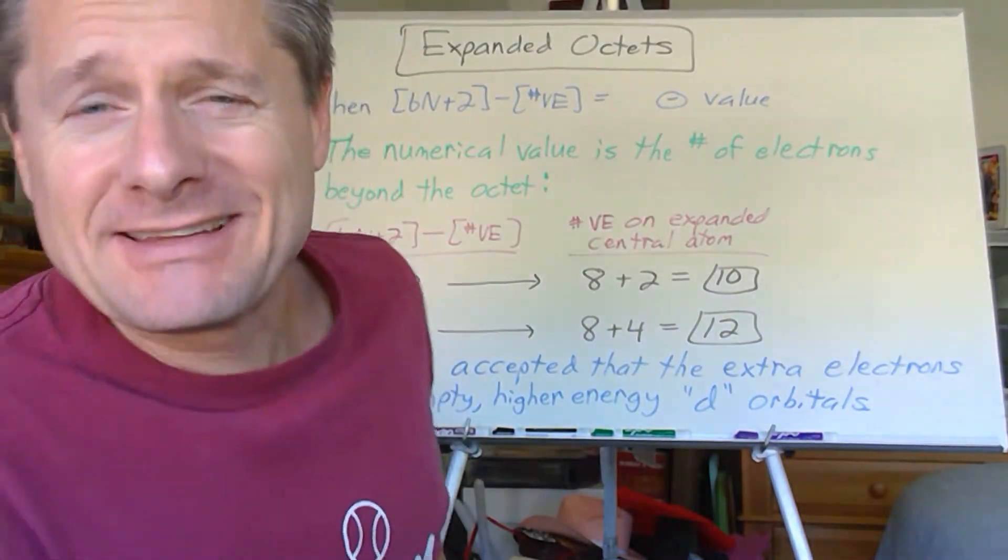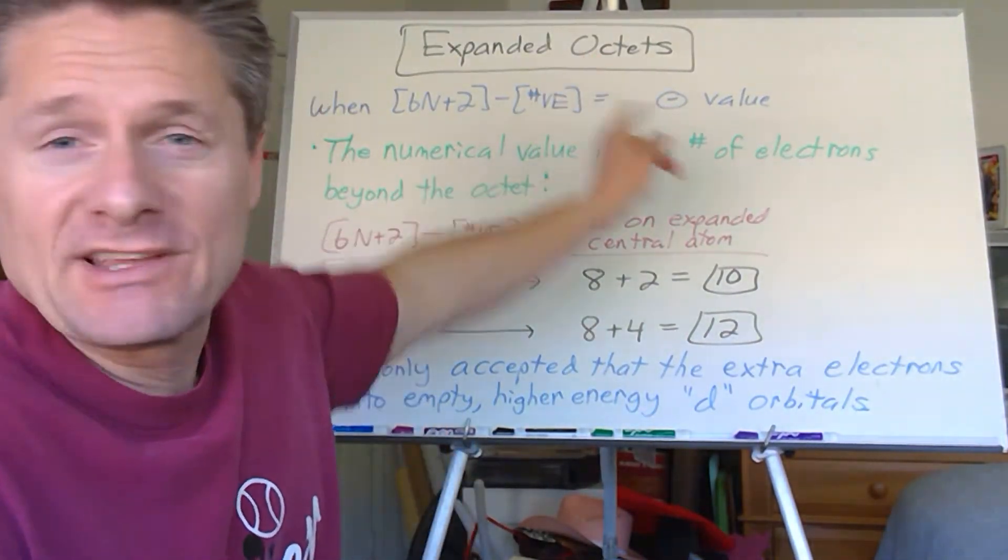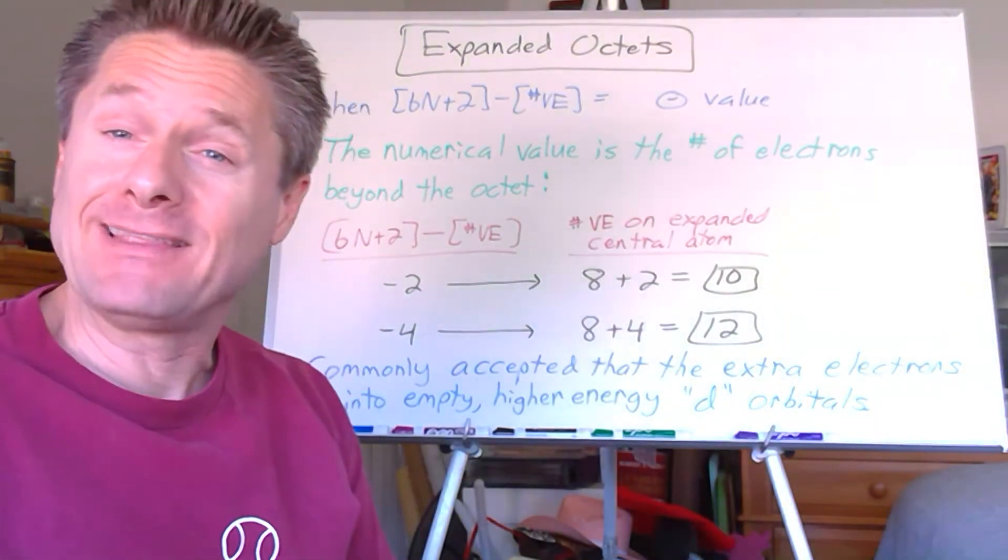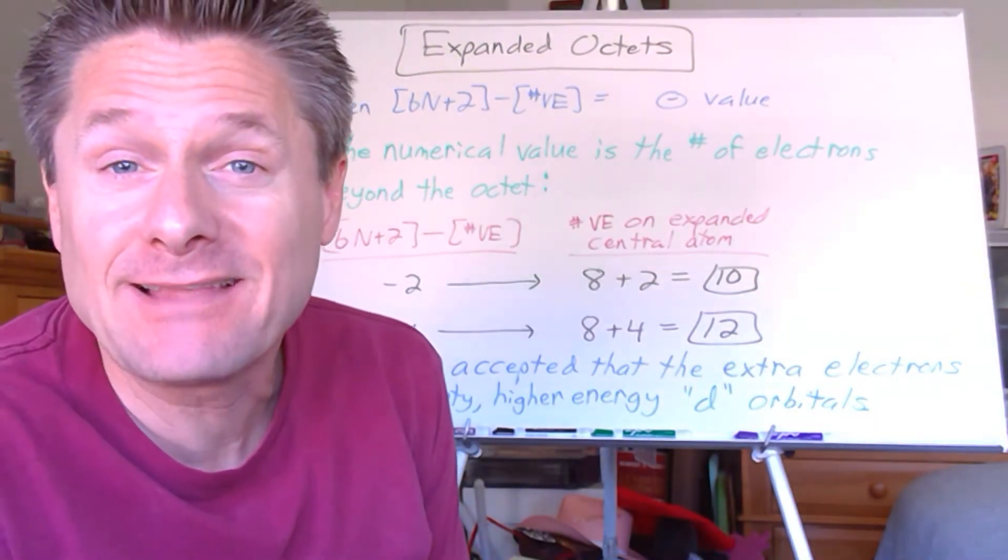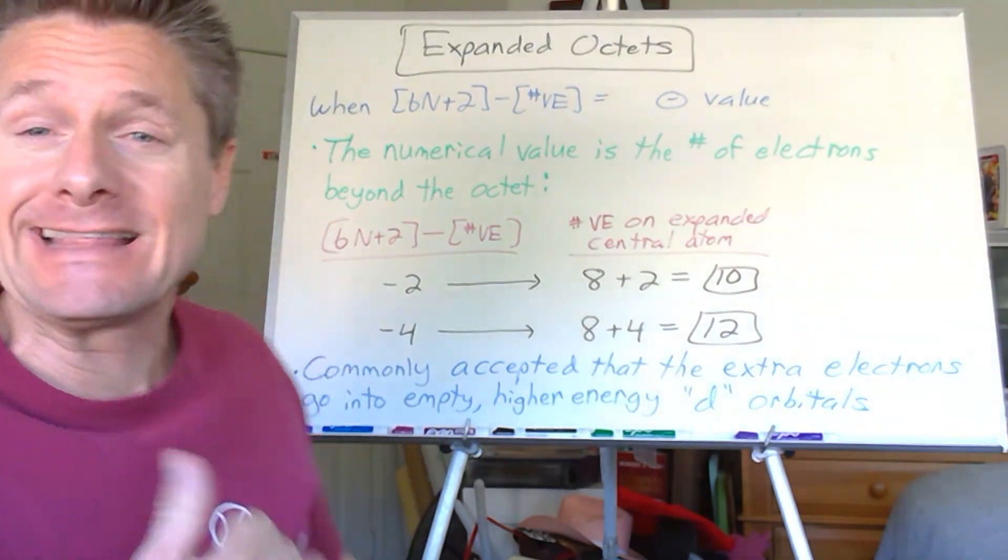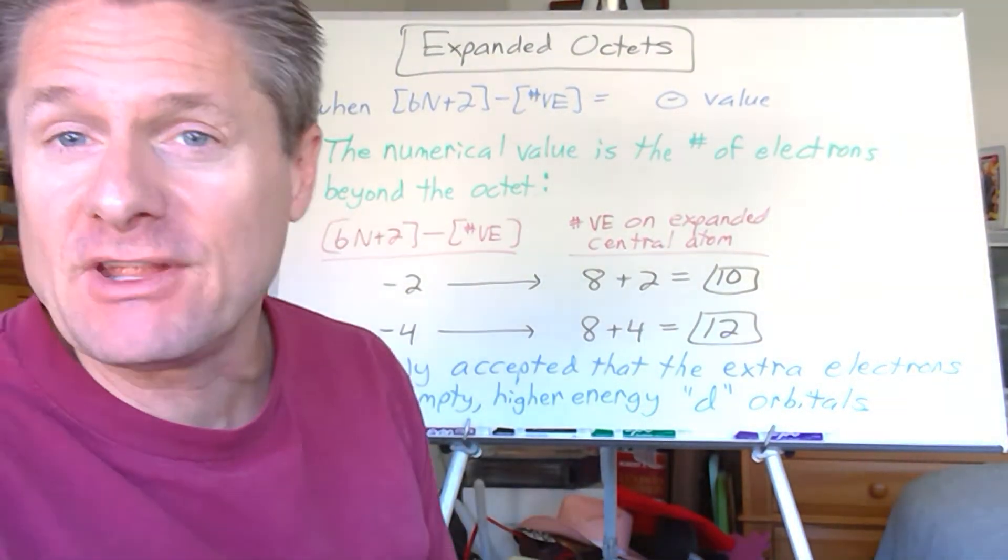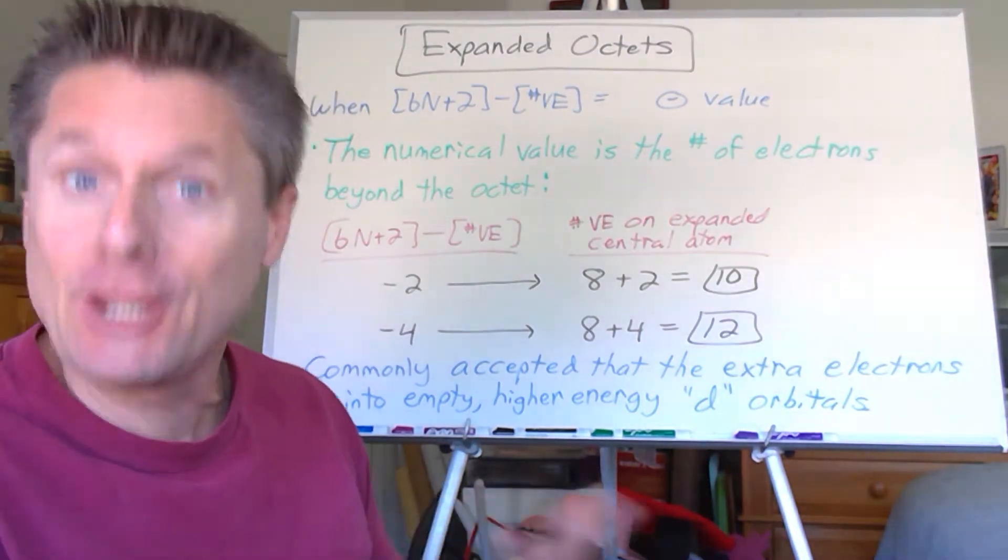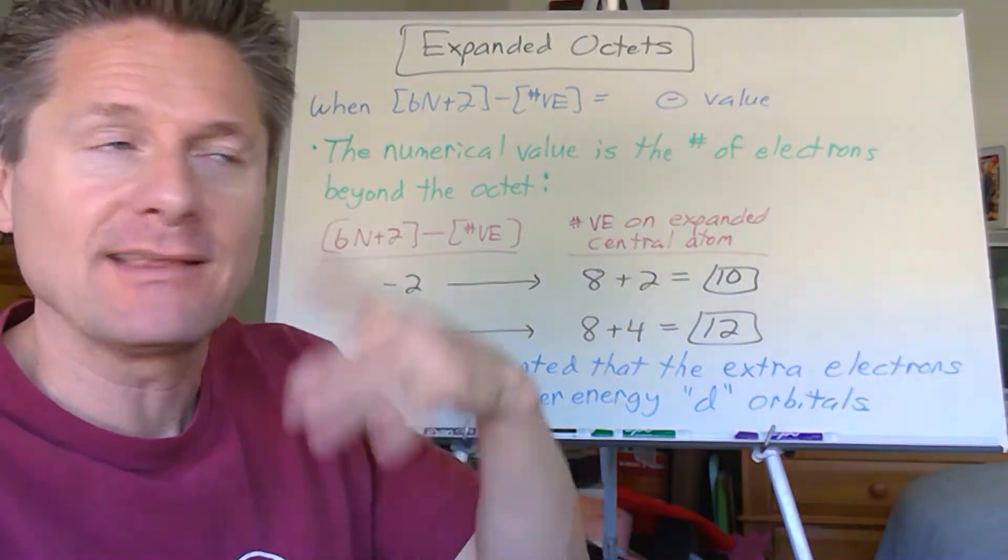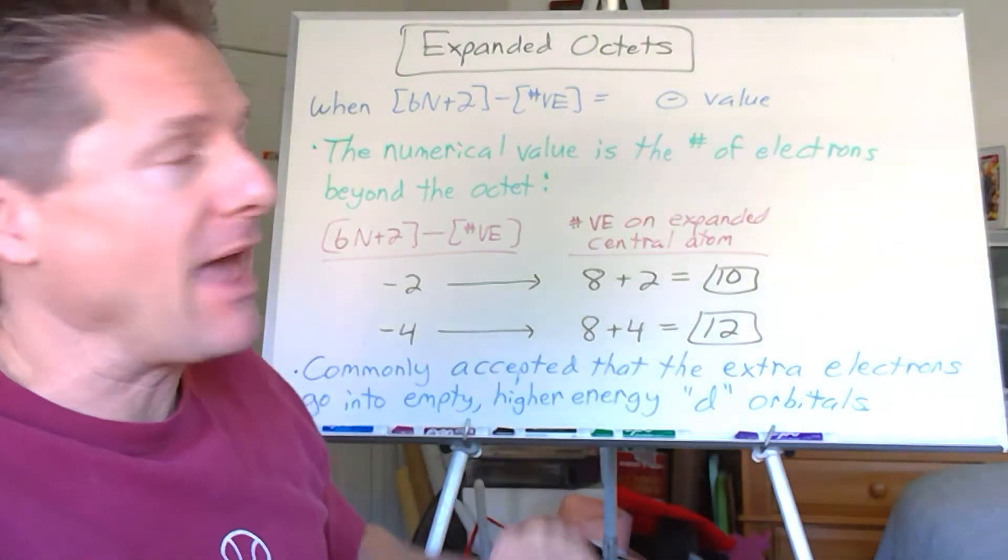Well, how are my favorite students? Coach coming back at you with expanded octets. We did multiple bonds in the last video. We're doing expanded octets this time. We'll do electron-deficient species the next one. We're just going to do maybe two or three examples of each one just so you become familiar with the thinking process. It's all patterns. Chemistry is all about patterns.